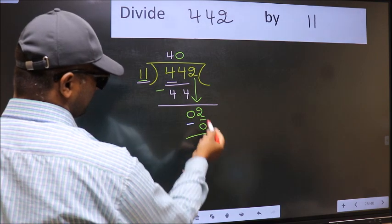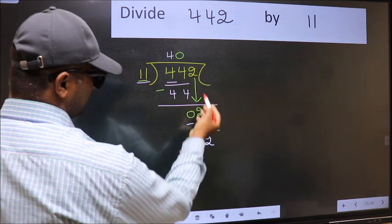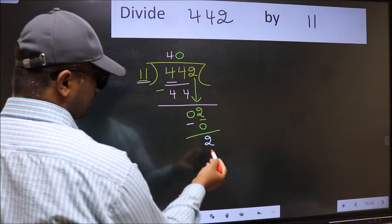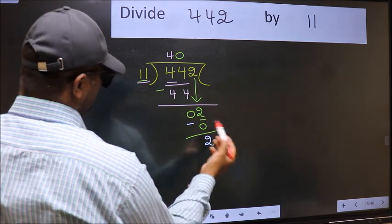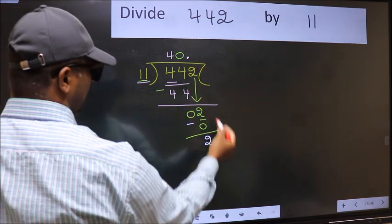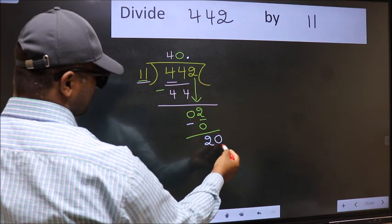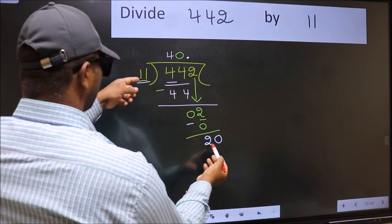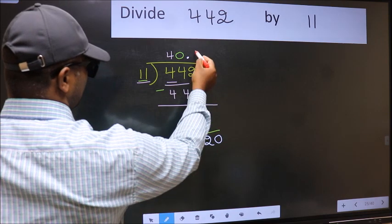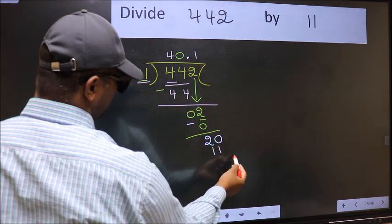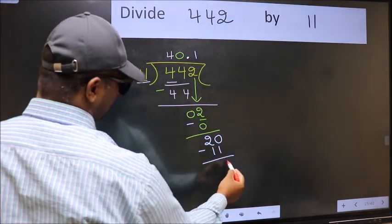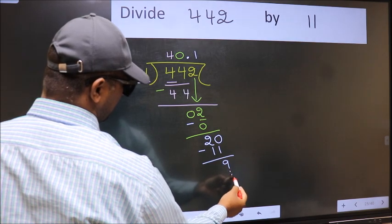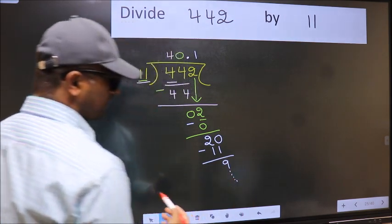Over here, we did not bring any number down. And 2 is smaller than 11. So now you can put dot and take 0. So 20. A number close to 20 in 11 table is 11 once, 11. Now you should subtract. You get 9. And continue the division. I am not doing that.